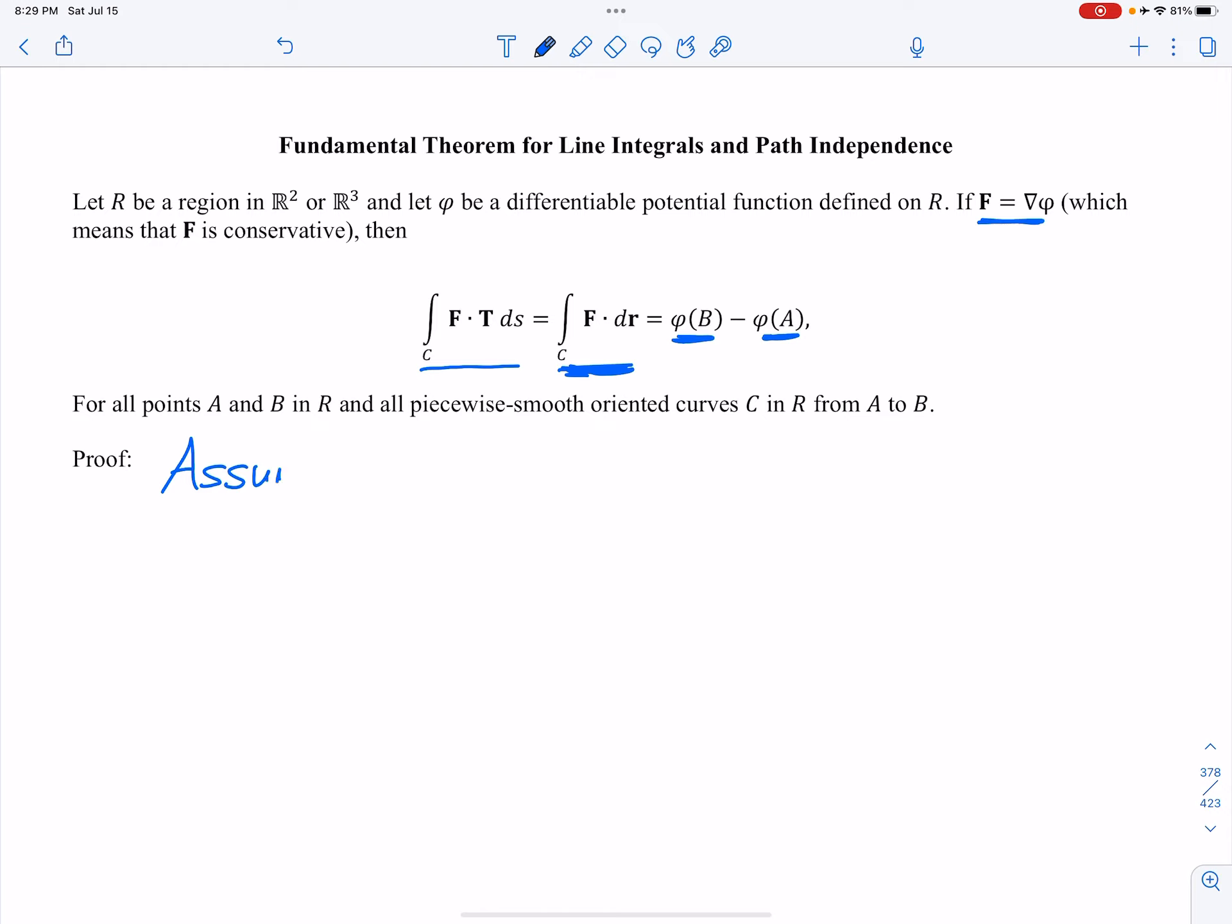Alright, so assume that F of X, Y is equal to gradient phi of X, Y. And then we're going to label this phi X. That's that component. And this is phi Y. Alright, that's how we would derive the gradient. Okay, so then if that's the case,